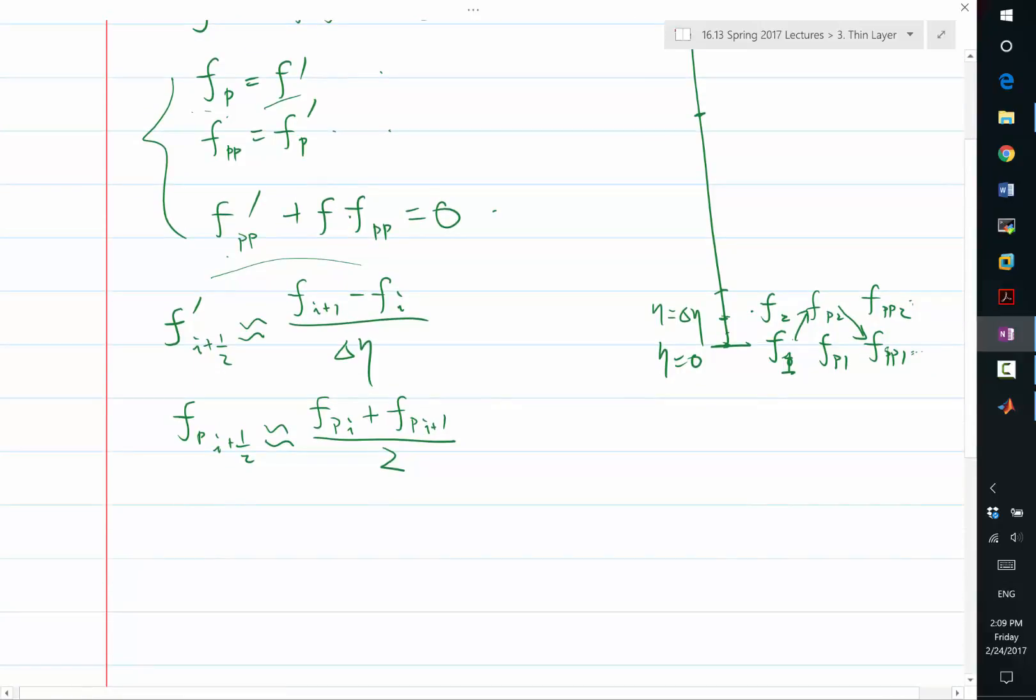So, the same thing we are going to use for fp prime and fpp prime. This is going to be the same type of one point central difference to approximate fp prime and fpp prime. And also, the same point average is going to be used for fpp and also f times fpp. So, f times fpp, for example, at i plus half is going to be approximated as fi fppi plus fi plus one fppi plus one divided by two.